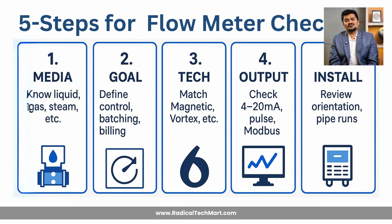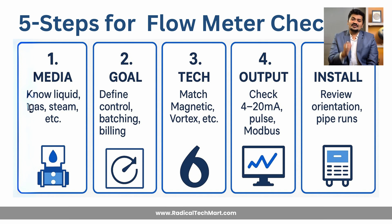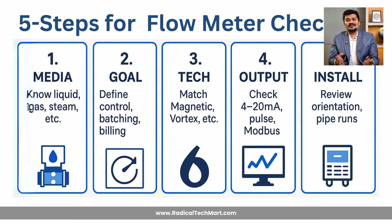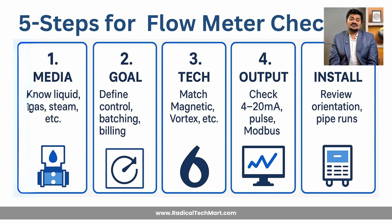First, know your media — liquid, gas, steam, or slurry. Second, define the goal — control, batching, monitoring, or billing. Third, match the technology — magnetic, vortex, and so on. Fourth, check your outputs — 4 to 20 mA, pulse, or MODBUS. Fifth, review your installation conditions — orientation, pipe runs, and space. Still unsure? Drop your application in the comment section and we will personally guide you.